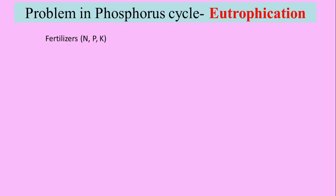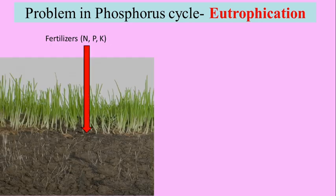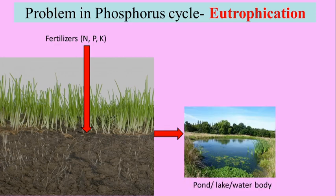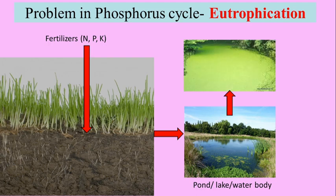Fertilizers synthesized after mining phosphorus from rock are applied to the soil. Whenever these fertilizers get washed away with rain, they may join nearby ponds, lakes, or other water bodies. In that case, fertilizers rich in phosphorus and nitrogen become a source of nutrition for algae, and these stagnant water bodies may get totally covered with algae.